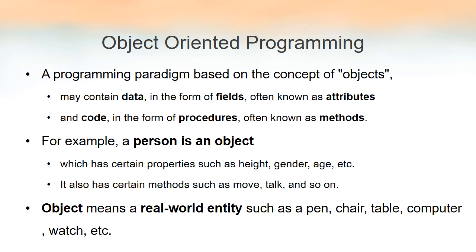Since human beings are also a real world entity, humans can also be considered as an object. Object oriented programming says any real world entity is an object because each and everything in this world has got some data — also known as attributes — and also every object has some functions or procedures, known as methods. So we can think of an object as anything that has some data or attributes plus some methods that make use of those attributes.